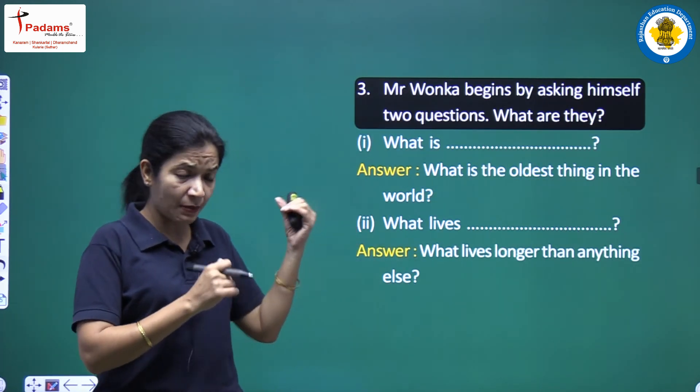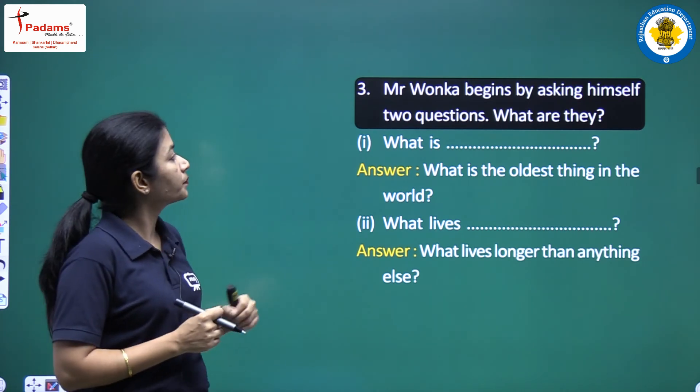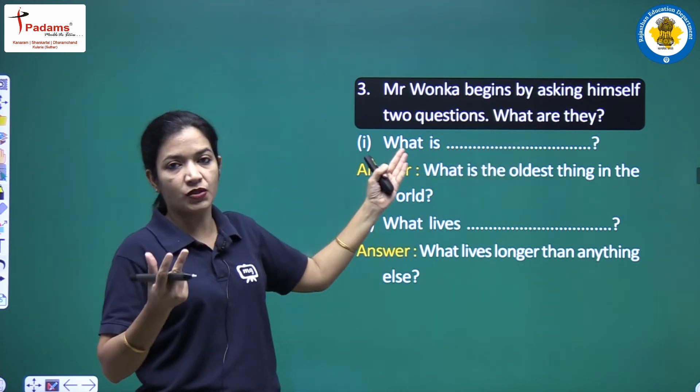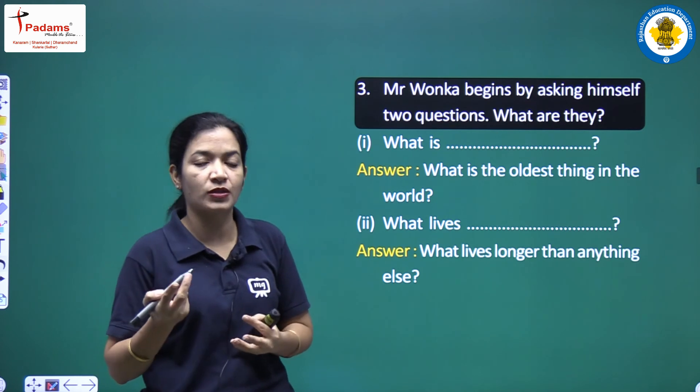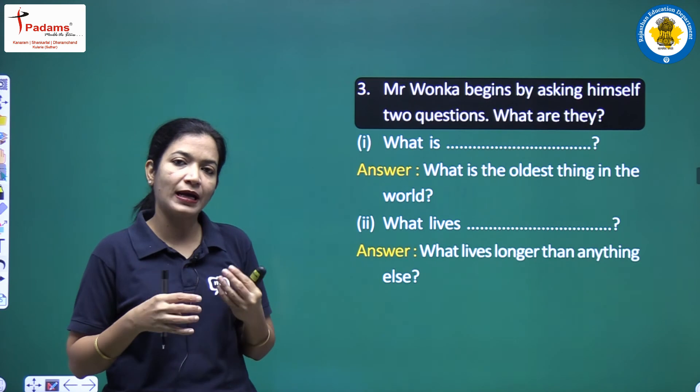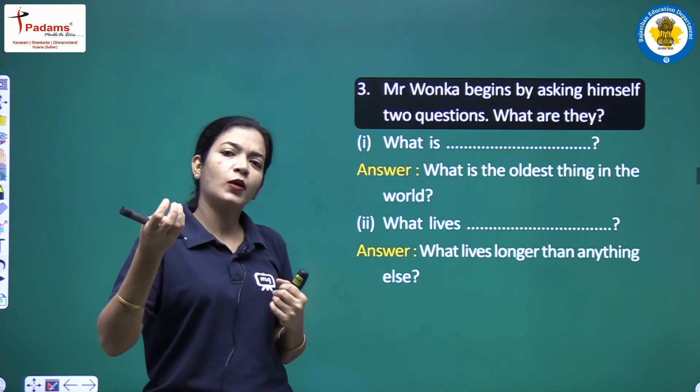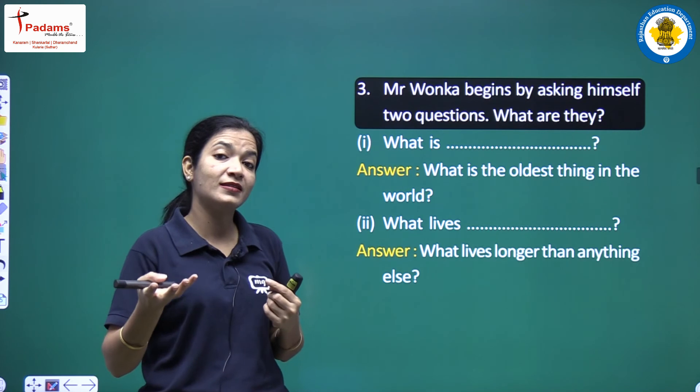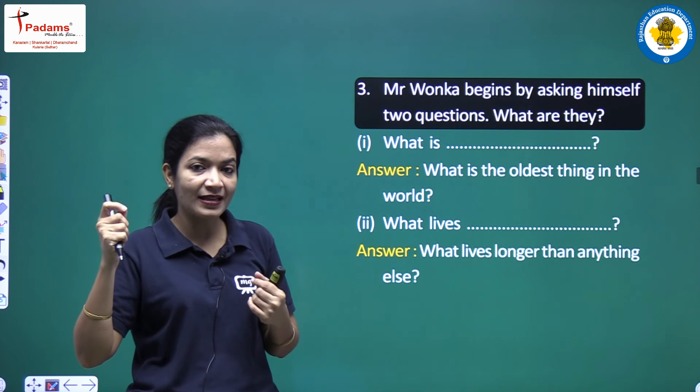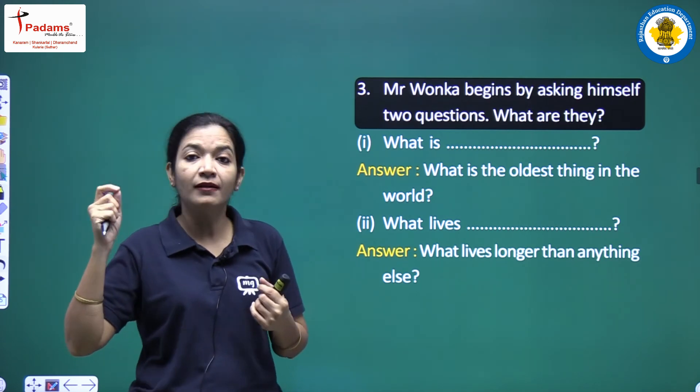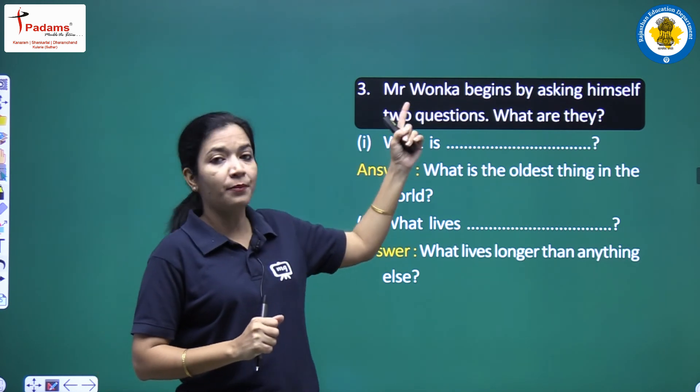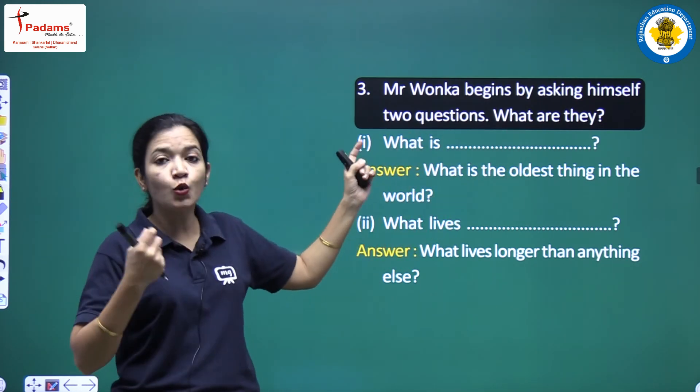Let's take the third one. Mr. Wonka begins by asking himself two questions. You remember, he was asking himself two questions and then all of a sudden Charlie replied. He was sitting thinking, asking himself what are the oldest things in the world, what things came first. Then Charlie gave an answer that it is a tree. So Mr. Wonka begins by asking himself two questions.